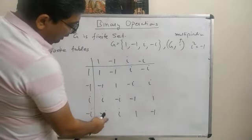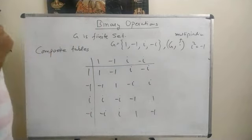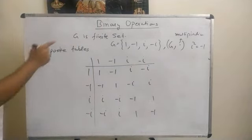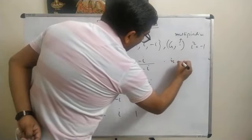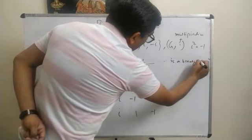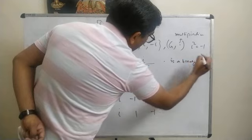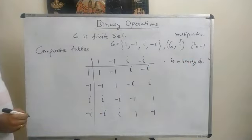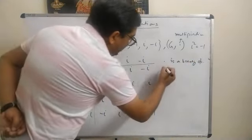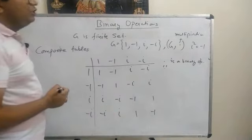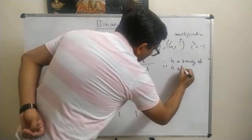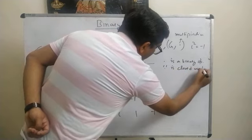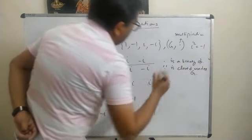If we look at this particular table, we can see it contains only elements of G — there is no element which does not belong to G. This tells us that the operation dot in this case is a binary operation, or we can say that the operation dot is closed under G.